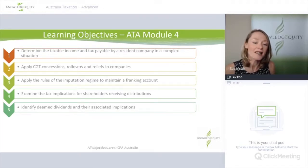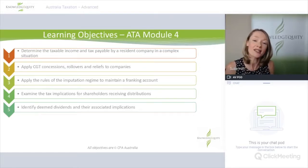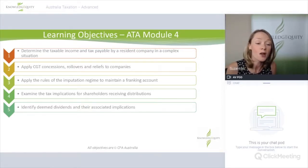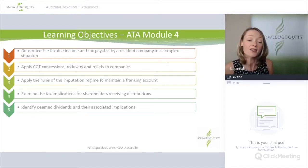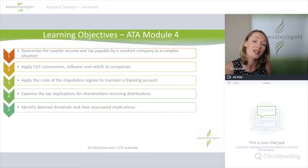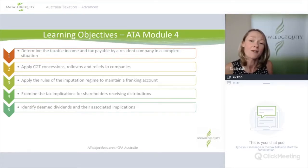In terms of our learning objectives, we've got five for this module. First, determine the taxable income and tax payable by a resident company. There's quite a lot of assumed knowledge in this learning objective, so the module doesn't go through this in a lot of detail, but it does summarise the process and look at the relevant corporate tax rates that we must apply. The second learning objective is to apply CGT concessions, rollovers and reliefs to companies.